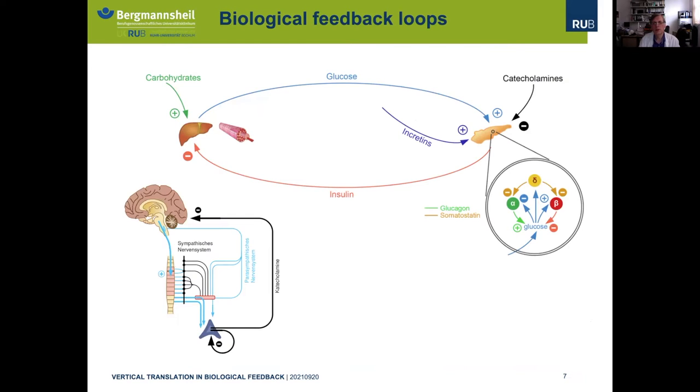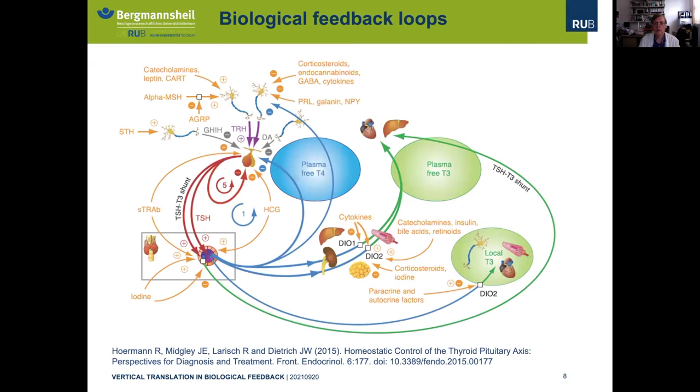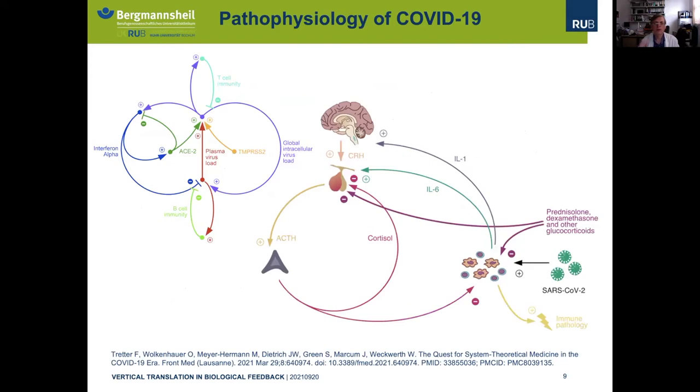Similarly, we have feedback loops controlling the glucose concentration with insulin and other hormones, feedback loops controlling catecholamine release, and feedback loops controlling the formation of other hormones. You see that the complexity is very different between the systems, but the basic structure of the feedback loop is the same. Very recently, research also pointed out the importance of feedback loops in the pathophysiology of COVID-19. This is an emerging field of growing interest.